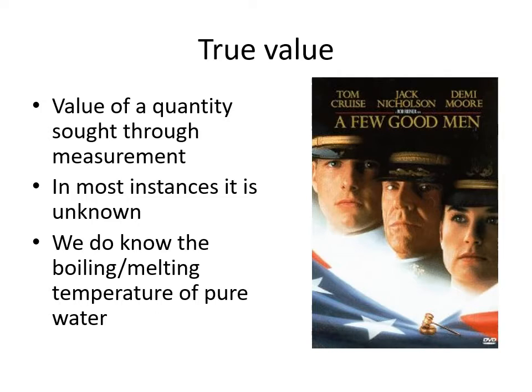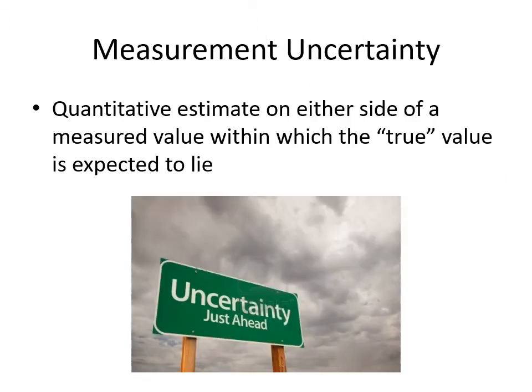There are a few things we do know true values for — the boiling and melting temperature of pure water, and similarly for mercury, alcohol, and so forth. We're interested in measurement uncertainty: we know a true value exists, but most of the time we don't know what it is. We have measured values and want an estimate of whether truth lies within the range of our measurements.